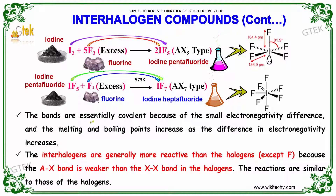The bonds are essentially covalent because of the small electronegativity difference, and the melting and boiling points increase as the difference in electronegativity increases. The interhalogens are generally more reactive than the halogens because the A–X bond is weaker than the X–X bond in the halogens. The reactions are similar to those of the halogens.